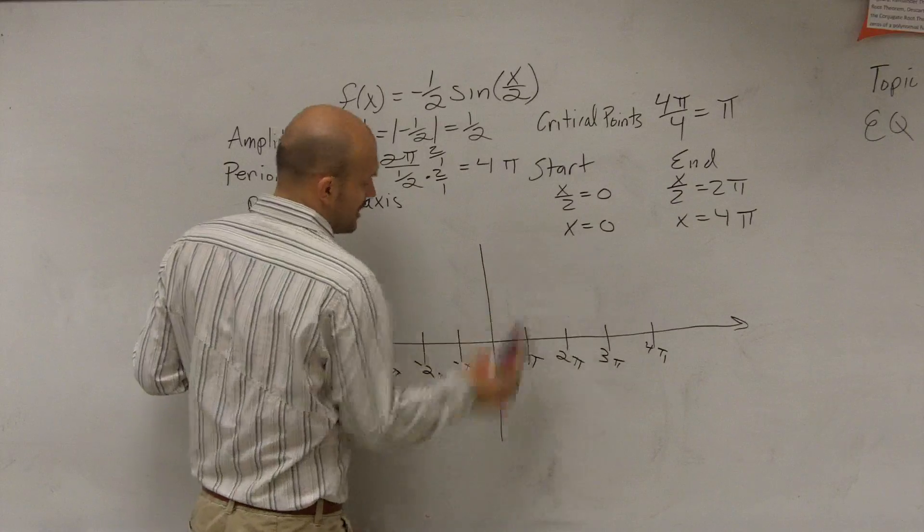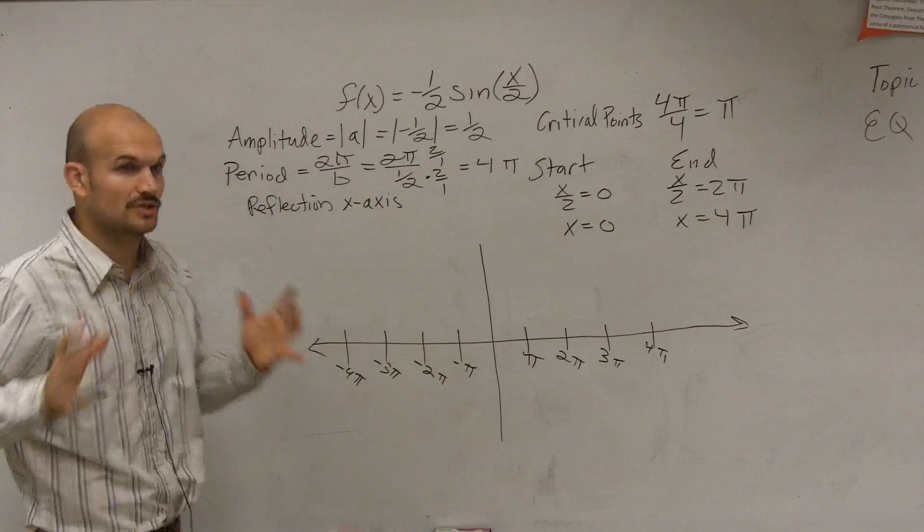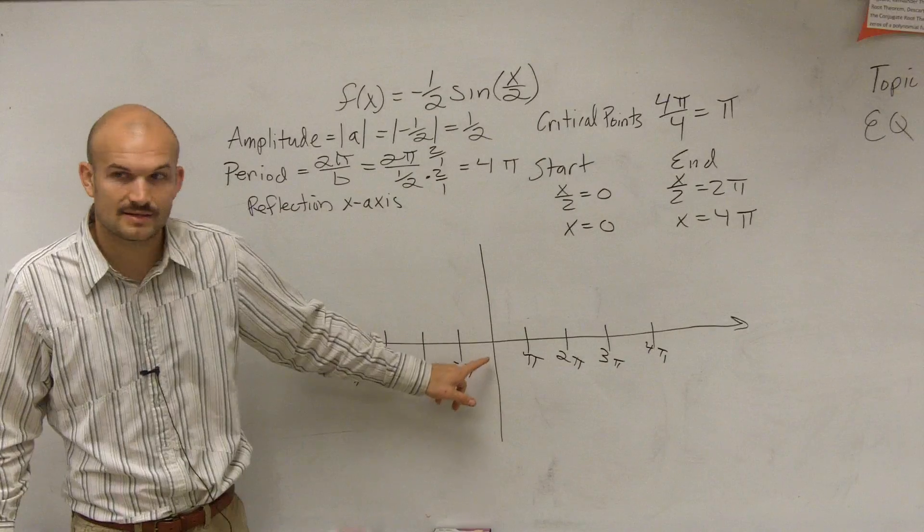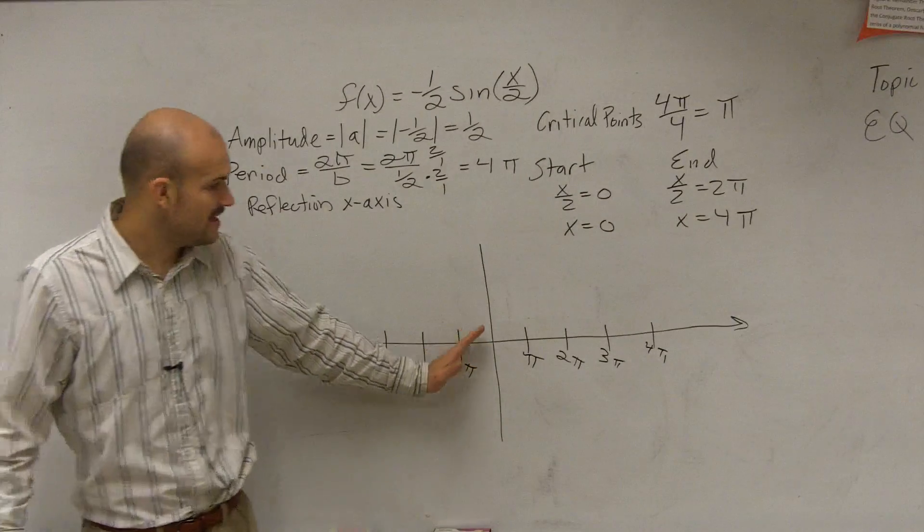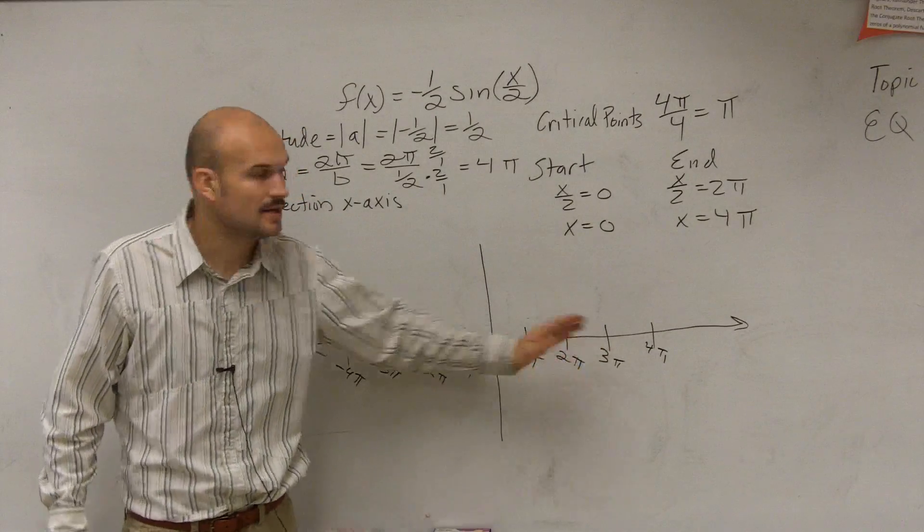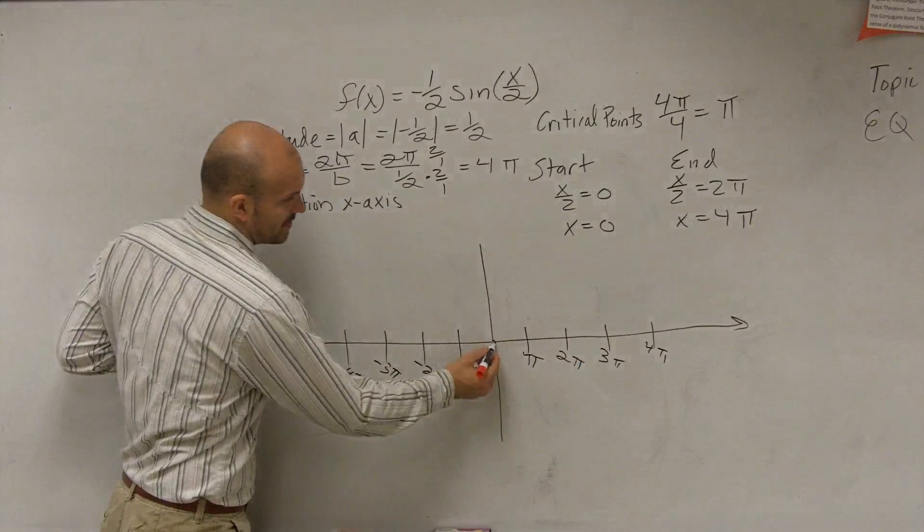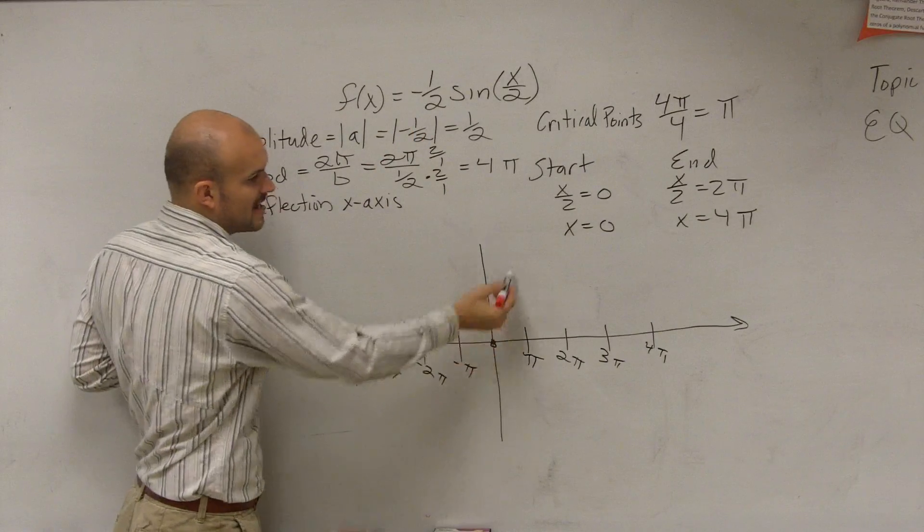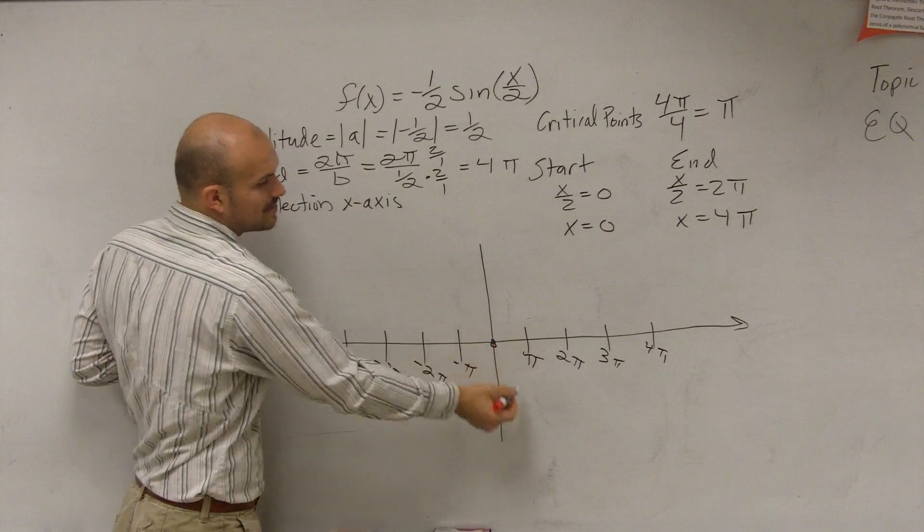All right. So let's remember what our sine function looked at. If you guys remember the sine function, the sine function crossed, or it started at zero, and then the first critical point was its maximum, and then it went down to its minimum. However, so we're going to start at zero. However, since we're reflecting, rather than the sine graph going up, we're now going to go down.